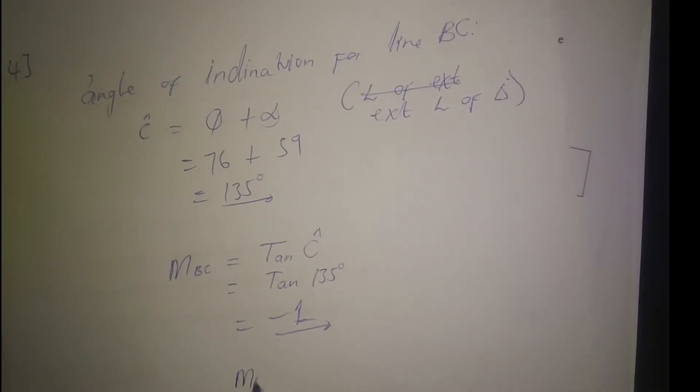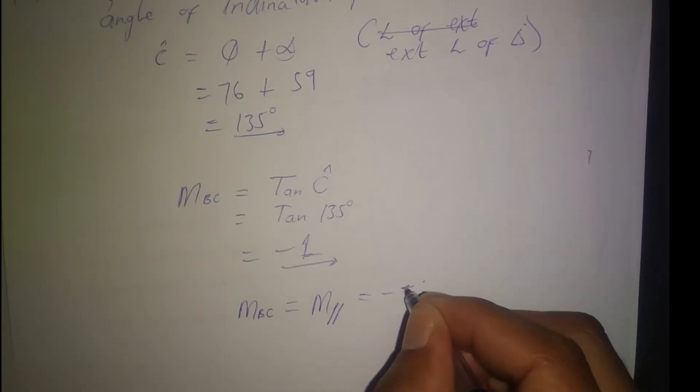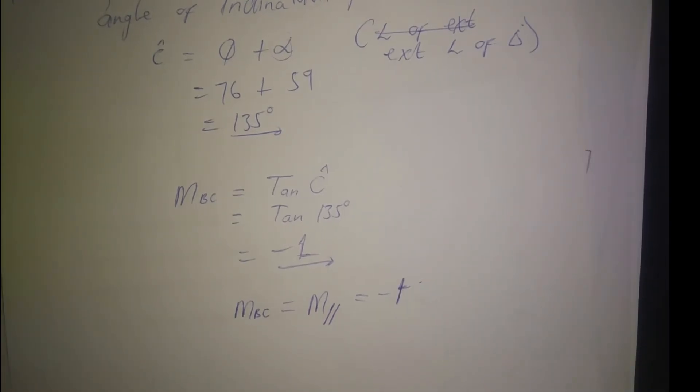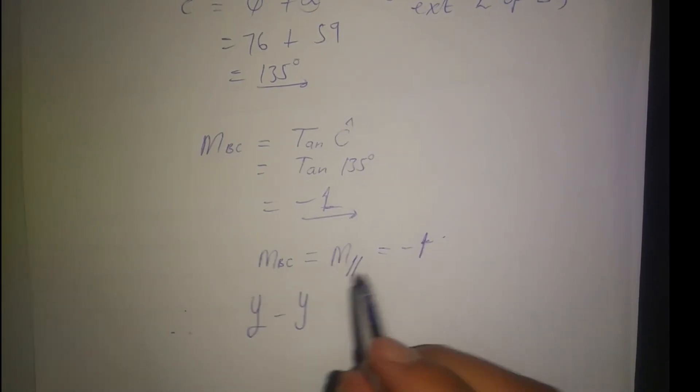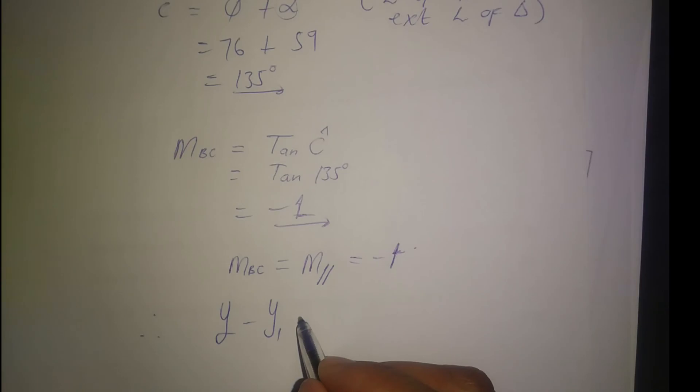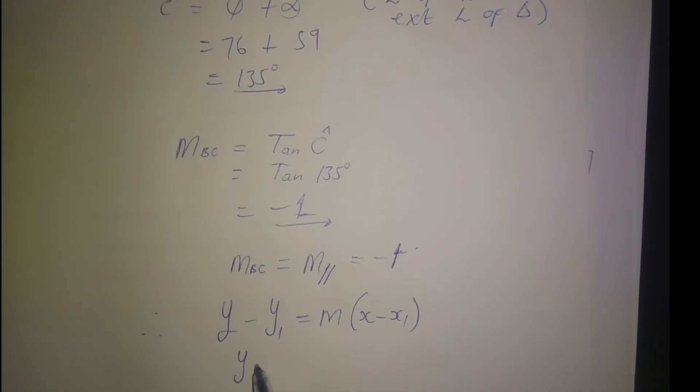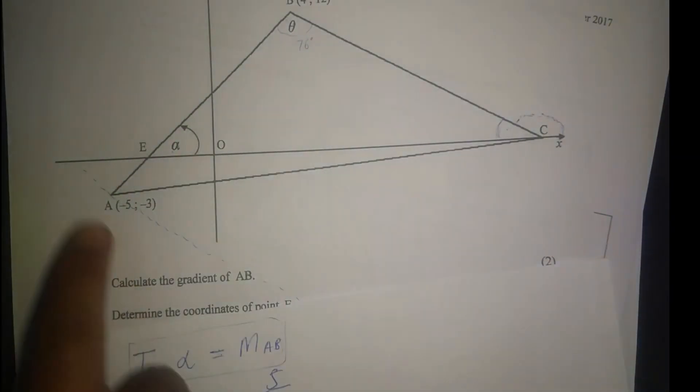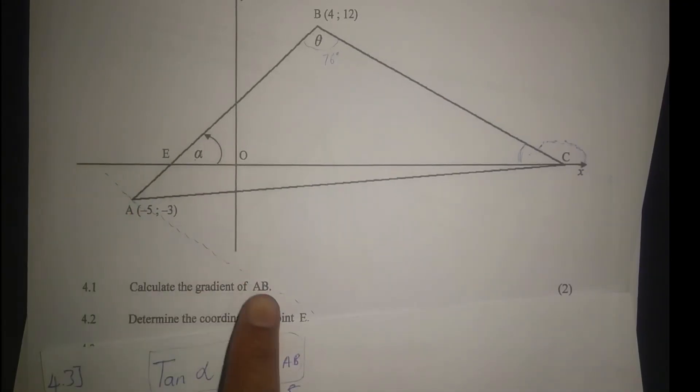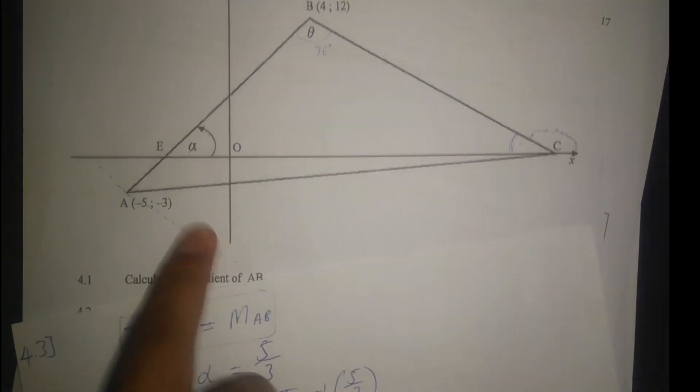Gradient BC equals tan of angle C, which is tan 135°, which equals negative 1. Gradient BC equals the gradient of the parallel line. So therefore the equation of the parallel line can be calculated as y minus y_1 equals m times x minus x_1.